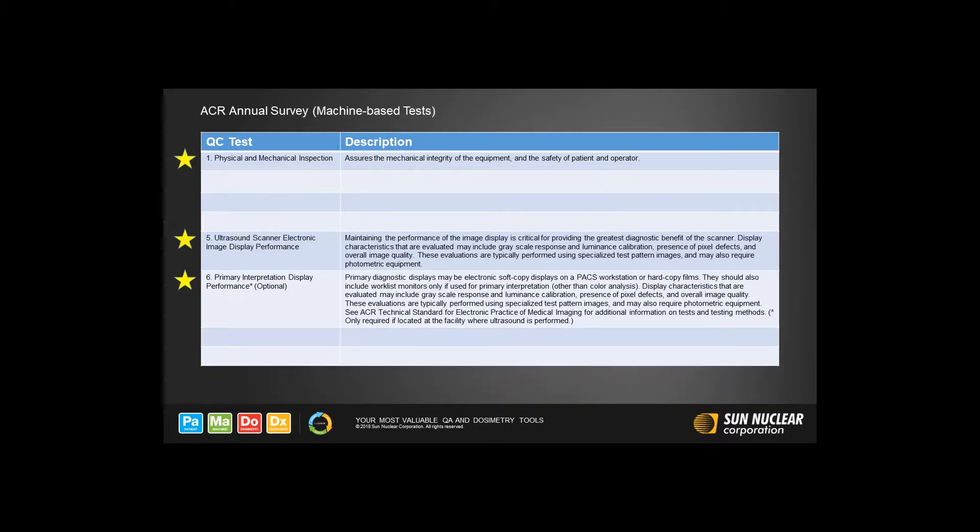Items on the ACR list include a physical and mechanical inspection of the scanner and, very importantly, making sure that the system display monitor shows all of the echo signal's grayscale values and matches the gray values on the PACS display used to interpret the images.